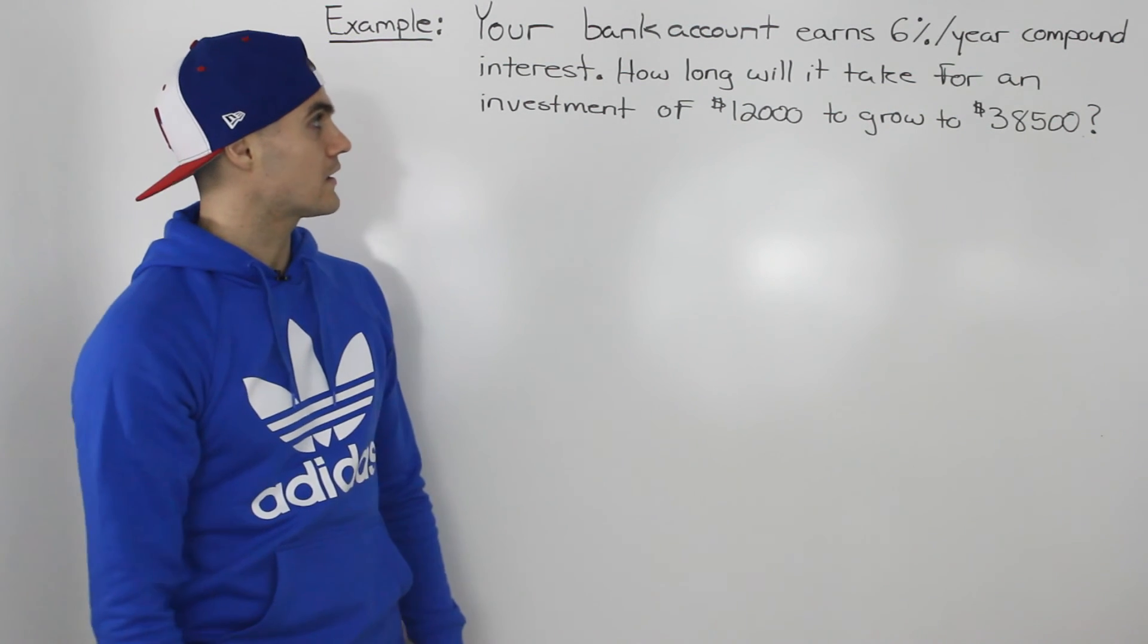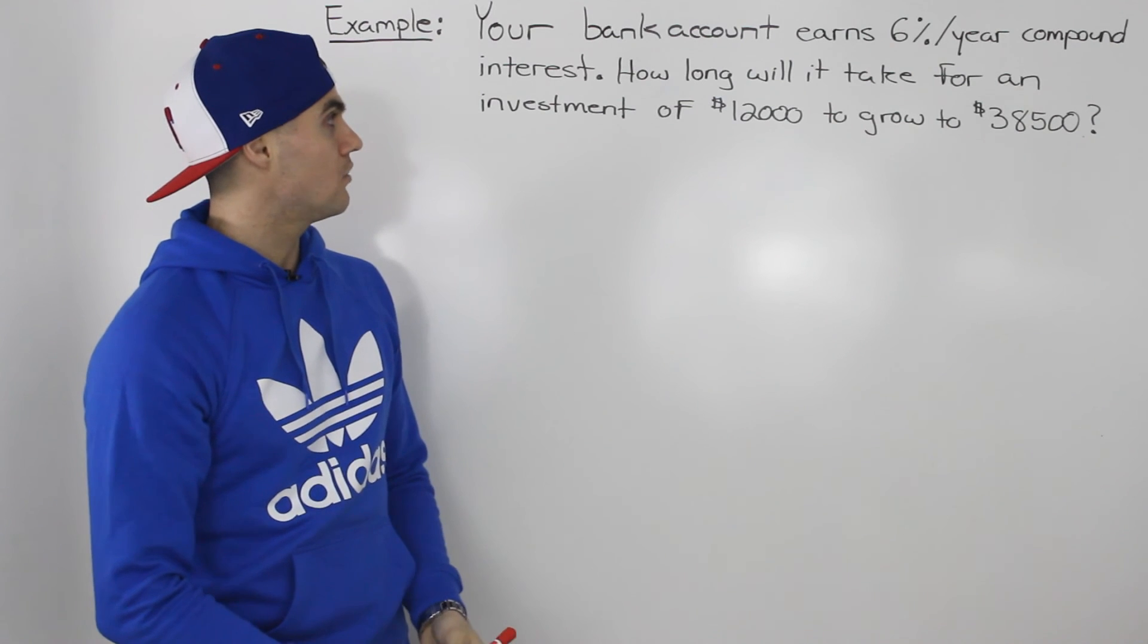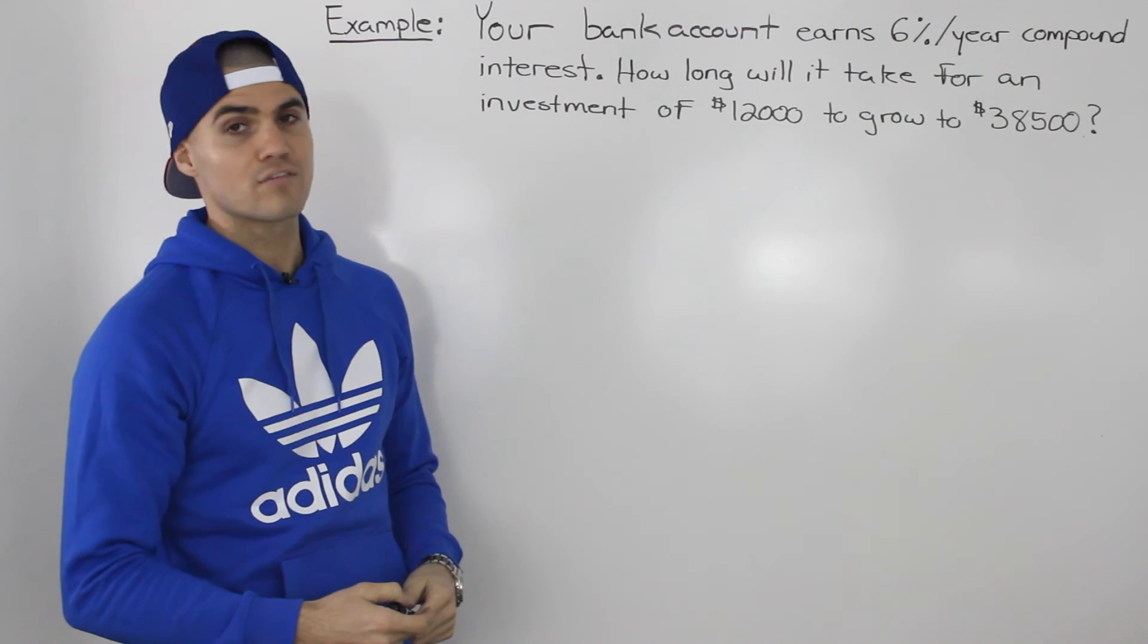Moving on to the next example, your bank account earns 6% compounded interest per year. How long will it take for an investment of $12,000 to grow to $38,500?